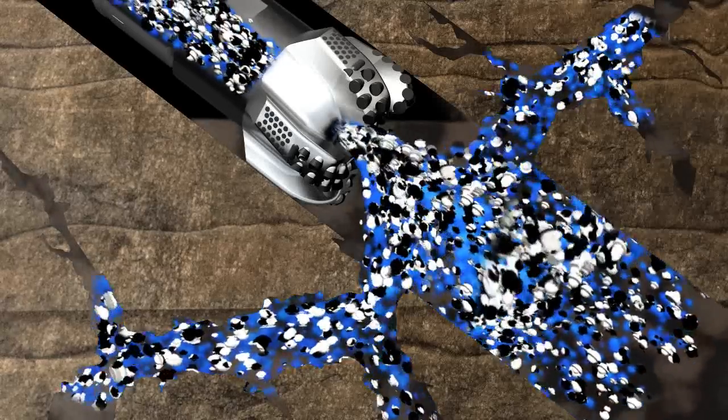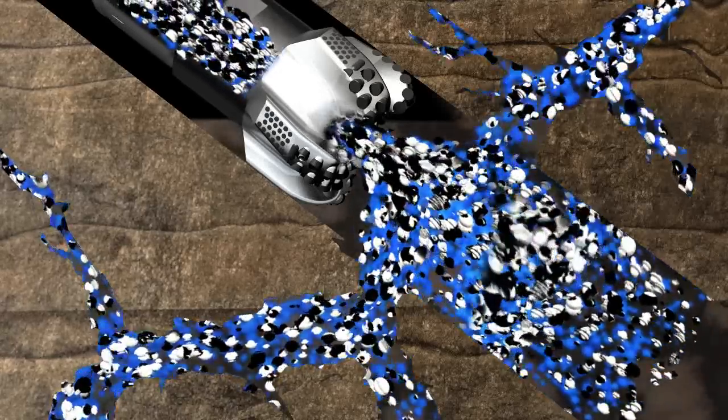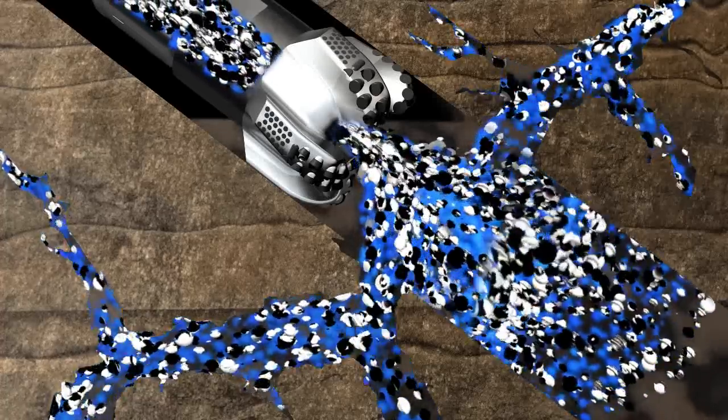Beroid's customized lost circulation pill is placed across the loss zone and seals off the fractures to reduce or eliminate the fluid loss.